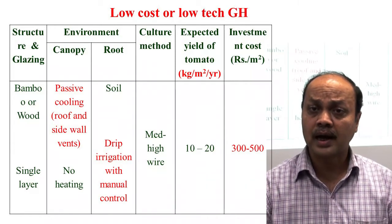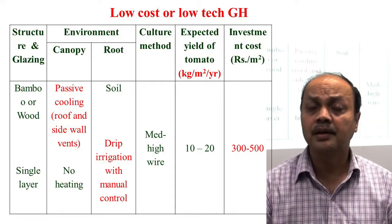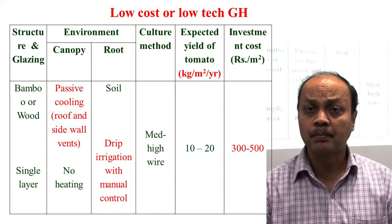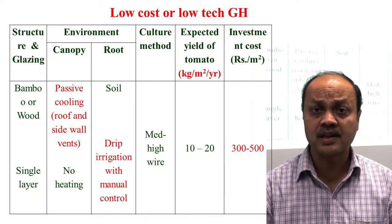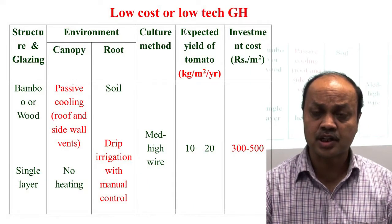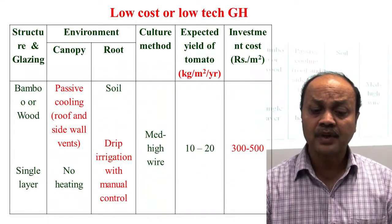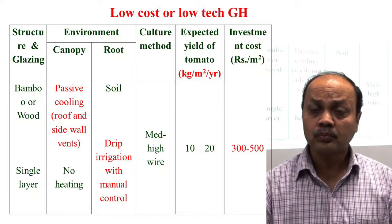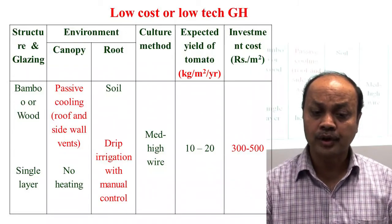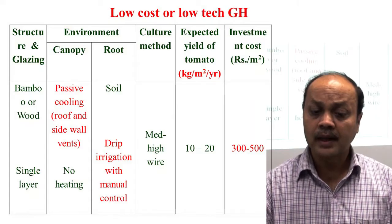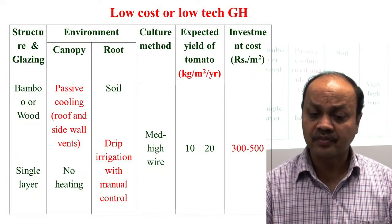The expected yield in a low-cost greenhouse — taking tomato as an example — is 10 to 20 kg per square meter per year, which equals 100 to 200 tonnes per hectare. The duration of the crop is also an important factor in protected structures. The investment is approximately 300 to 500 rupees per square meter.